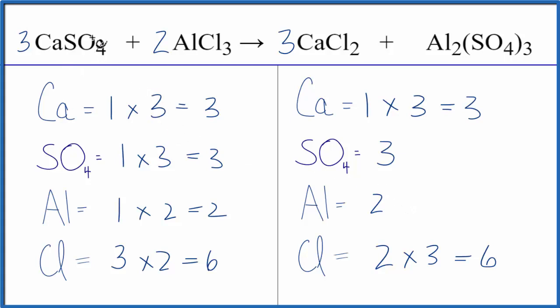So when you have these double displacement reactions, if you count the polyatomic ions as just one item when they appear on both sides, it makes it a lot quicker to balance. This is Dr. Beat with the balanced equation for calcium sulfate plus aluminum chloride. Thanks for watching.